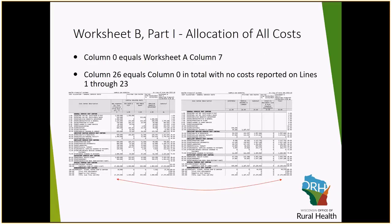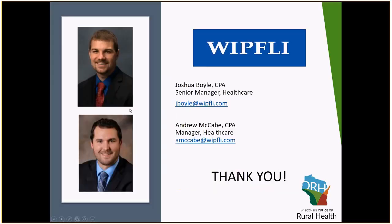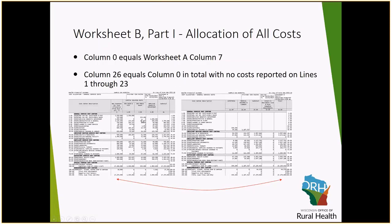This slide provides an example of how the B-1 series starts. In column 0, we start with the costs that flow over from Worksheet A — your total allowable costs on the cost report. As you go through B-1, you are allocating the cost and it steps down to the next department. The order that these are presented cannot change and you do not allocate costs back up to a previous department. It only steps down to the revenue producing departments when completed, and the total when done will agree to the total that was started at the very beginning.